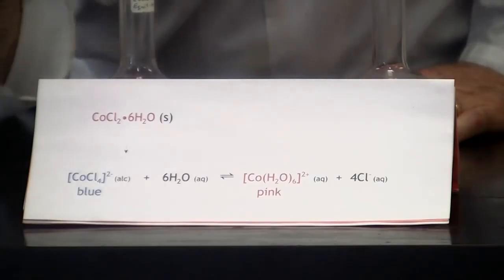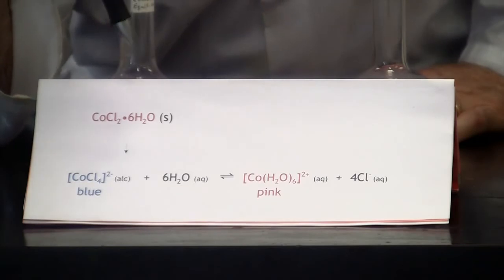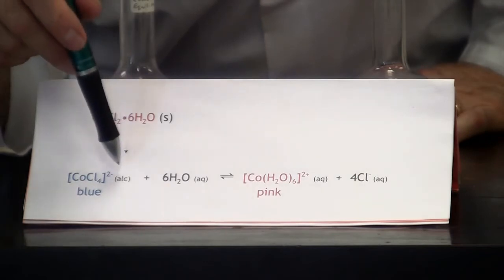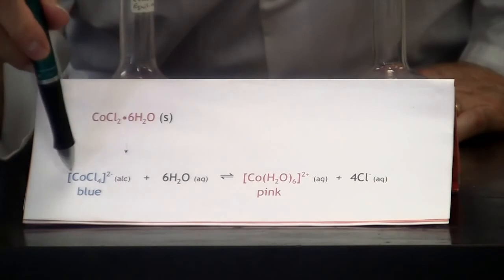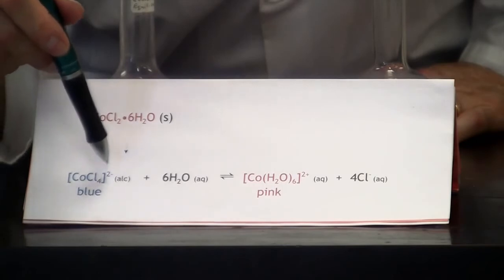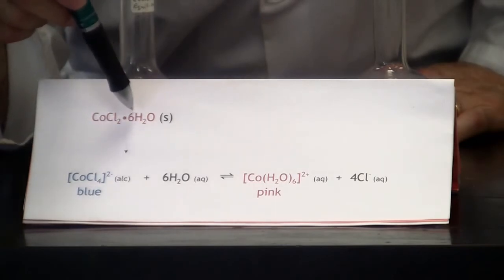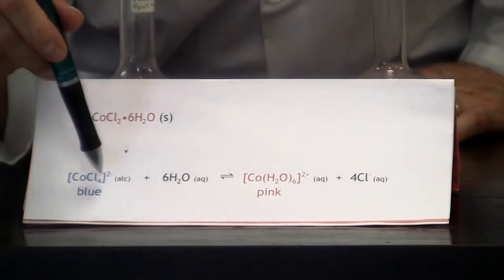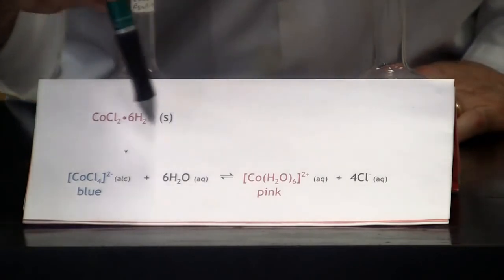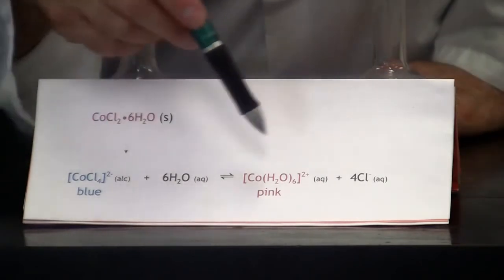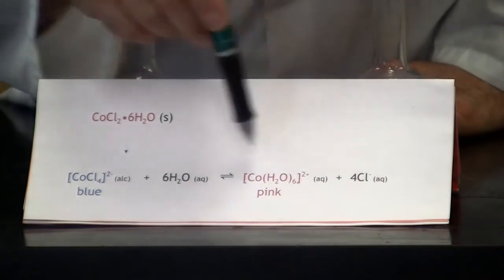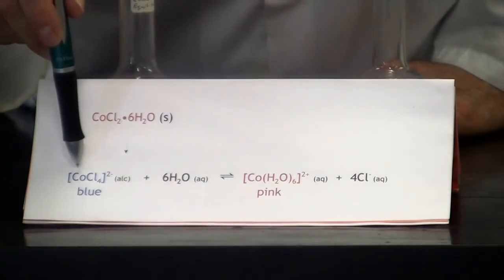Now here is an interesting solution to our problem in the first demonstration. Instead of dissolving the cobalt chloride in water, we dissolve it in alcohol, and by doing that we get a nice blue color. Presumably the alcohol removes this small amount of water by hydrogen bonding, allowing the chloride ions to surround the cobalt giving us this nice blue color. According to Le Chatelier's principle, if we add water we'll shift the equilibrium to get the pink color, and by adding a chloride ion we'll shift it back to get the blue version.